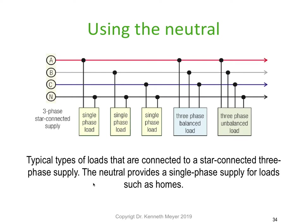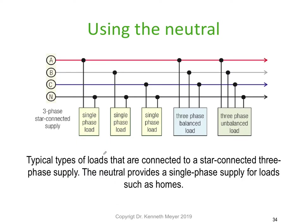Using the neutral: typical loads connected to a star-connected three-phase supply — the neutral provides a single-phase supply for loads such as homes. In the street, connected to substations, house one connects to A-phase, house two to B-phase, and house three to C-phase, but they're all connected to the neutral to get their 230-volt supply. The supply authority alternates A, B, C all the way down the street, trying to keep the load as balanced as they can.